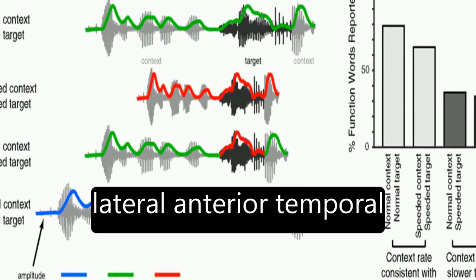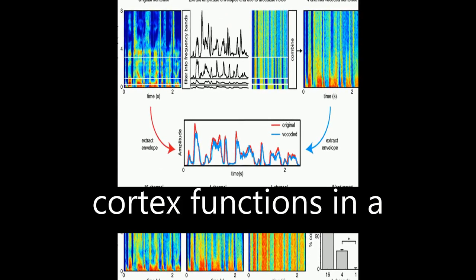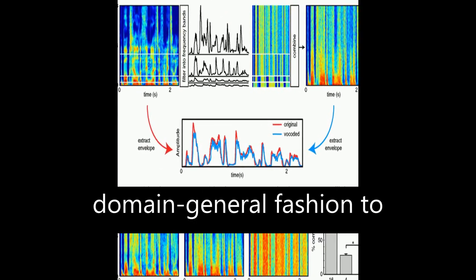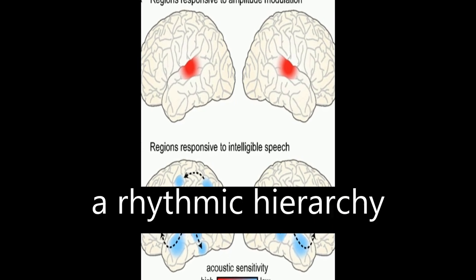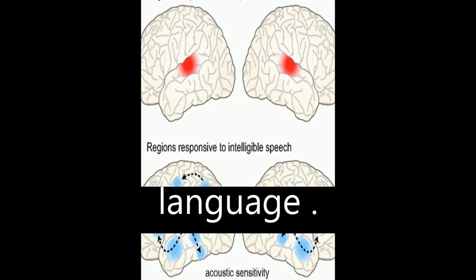It also proposes that lateral anterior temporal cortex functions in a domain general fashion to support ongoing memory and integration of meaningful input, forming the foundation of a rhythmic hierarchy supporting spoken language.